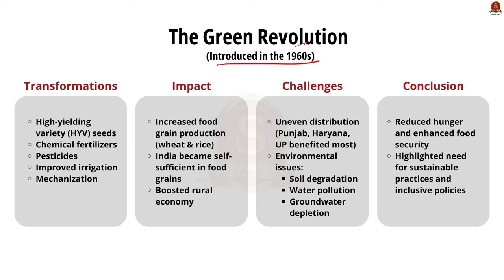The Green Revolution in India was initiated in the 1960s. It brought a significant transformation in agriculture by introducing high-yield variety seeds, chemical fertilizers, pesticides, improved irrigation, and mechanization. It was supported by government policies and subsidies and led to a substantial increase in food grain production, particularly wheat and rice, making India self-sufficient in food grains. However, benefits were unevenly distributed — states like Punjab, Haryana, and Uttar Pradesh reaped most of the rewards — and intensive use of chemicals caused soil degradation, water pollution, and groundwater depletion.